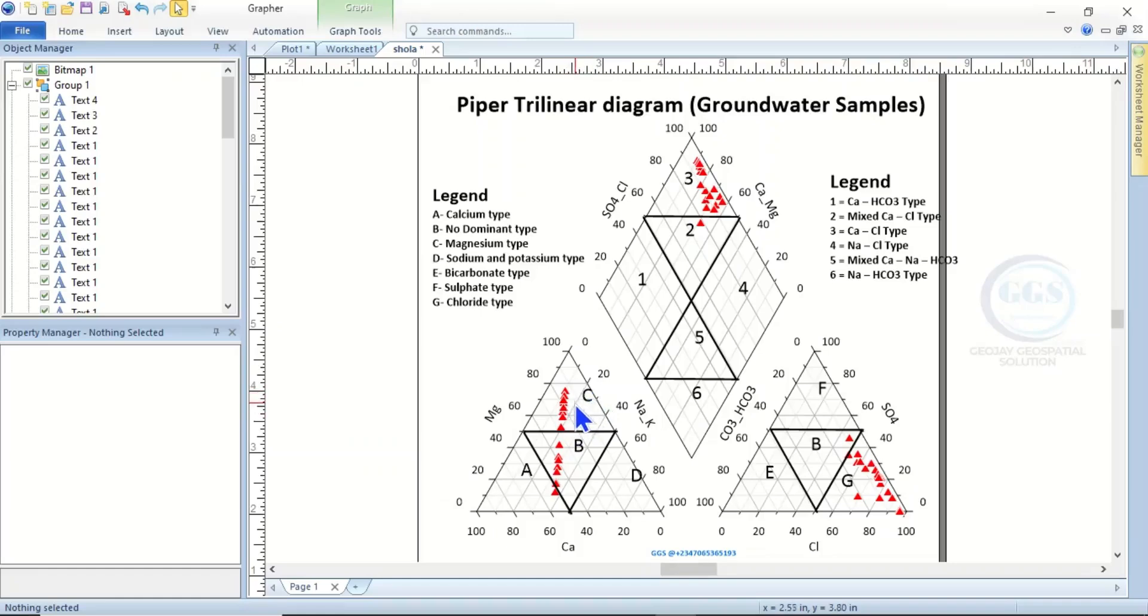Now coming to anions, you can see the anions here. E is bicarbonate type. For example, F is sulfate type. You can see that sulfate is at 100 here and zero here. Likewise, chloride is at 100 at this point and zero at this point.